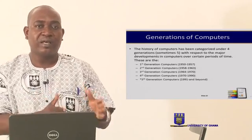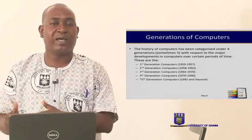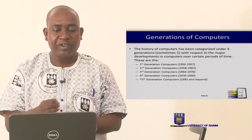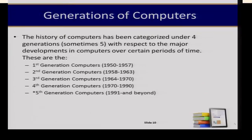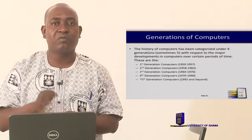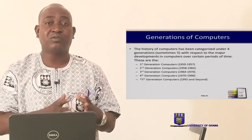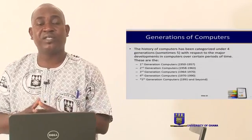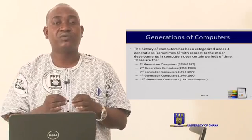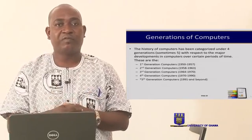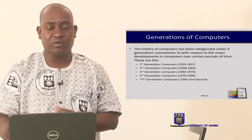You realize that as the days go by, the size is becoming smaller, but the capacity and the speed increases. The current generation, starting from 1991 to the present dispensation, uses what we call very large integrated circuits. They have different characteristics in terms of storage, speed, and size. The price is also relatively lower and cheaper than before. So these are the main five generations of computers that we have gone through.